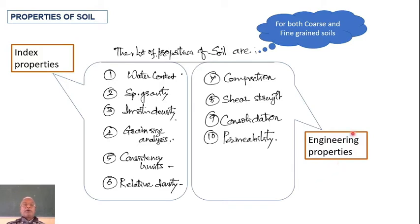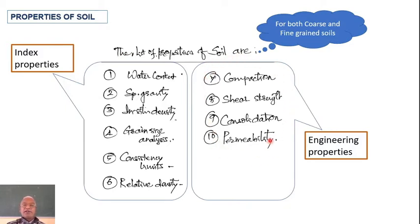So, in this slide we have studied that there are 10 properties — six on the left-hand side and four on the right-hand side. The set of six is called index properties, and the set of four is called engineering properties.